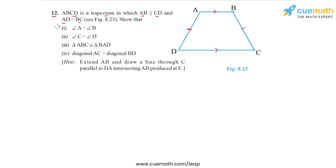Let's focus on the first two of these four things. We have to show that angle A is equal to angle B, and angle C is equal to angle D. We are given this hint: extend AB and draw a line through C parallel to DA, intersecting AB produced at E.